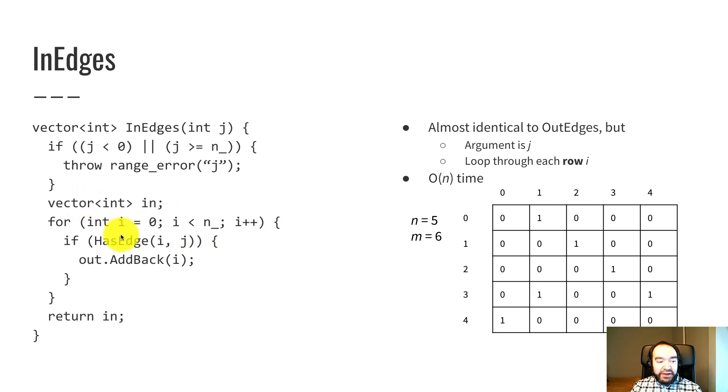We loop through each row. And if there is an edge from i to j, then I add i to this in vector. And then we return in at the end.